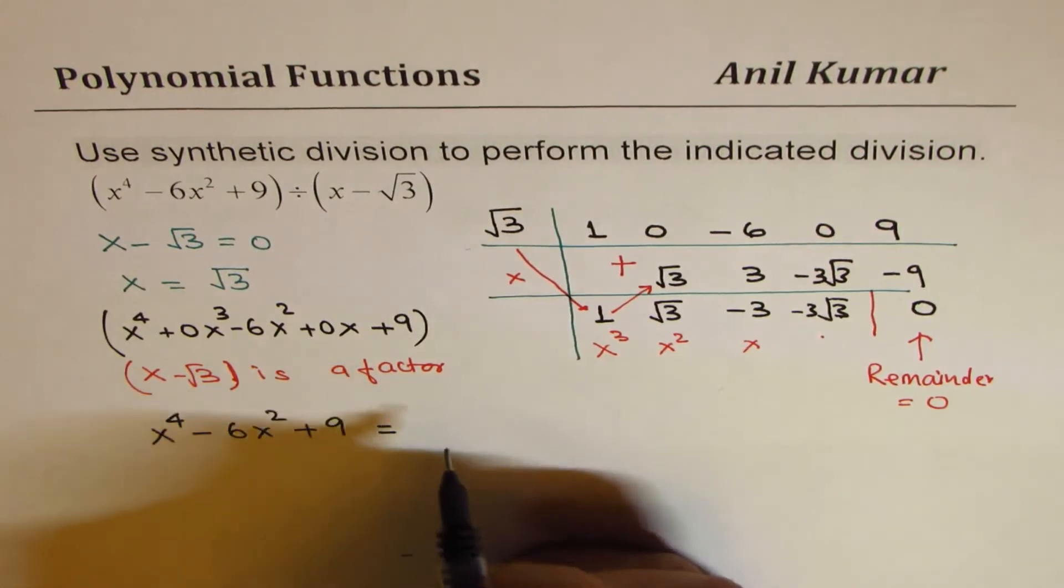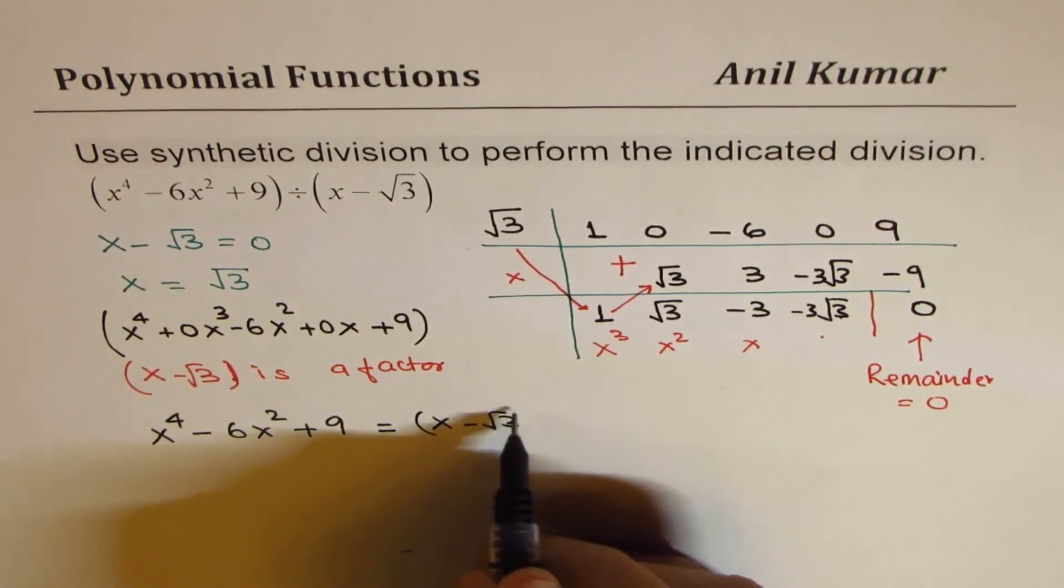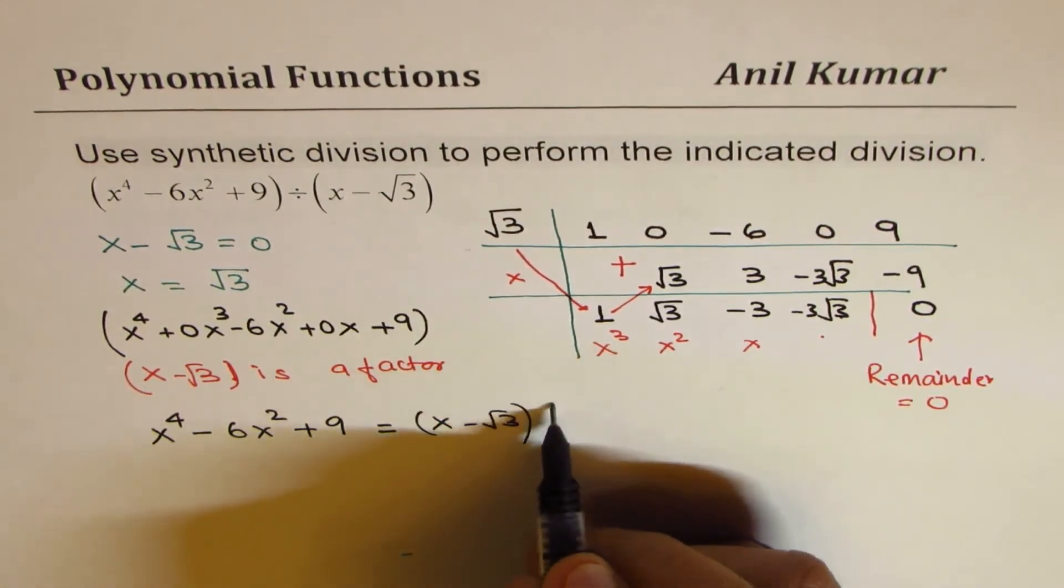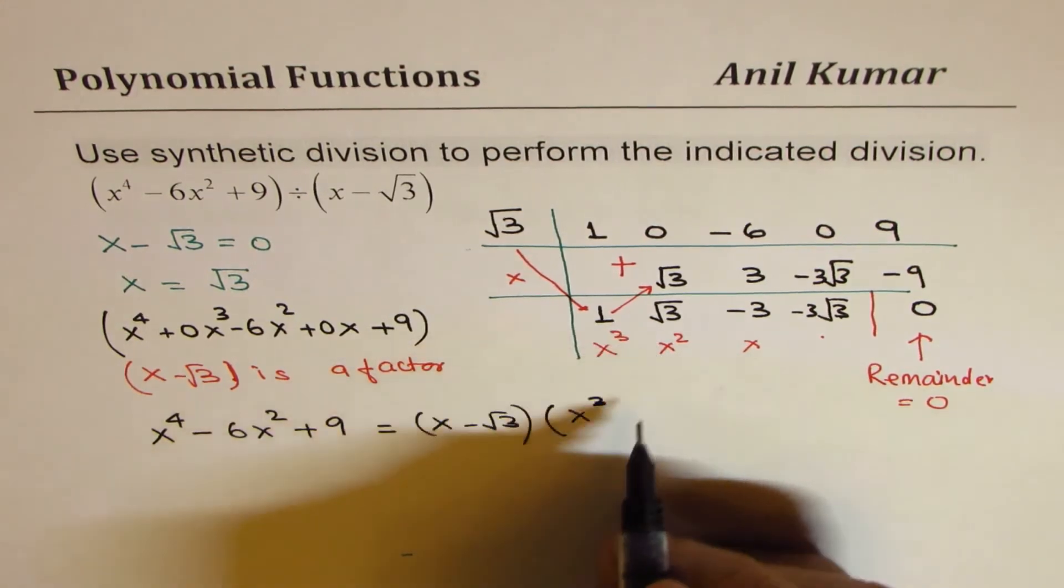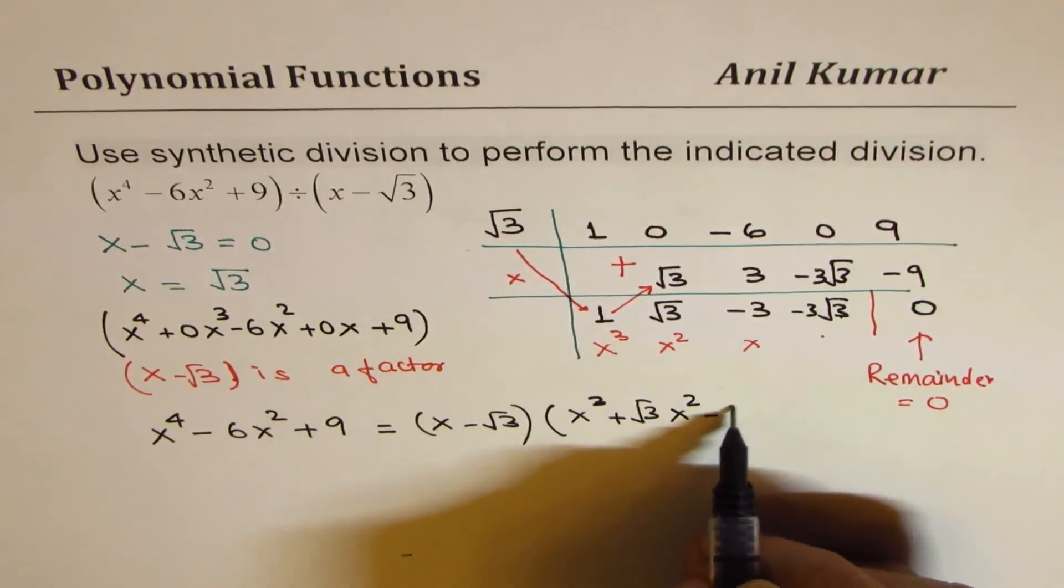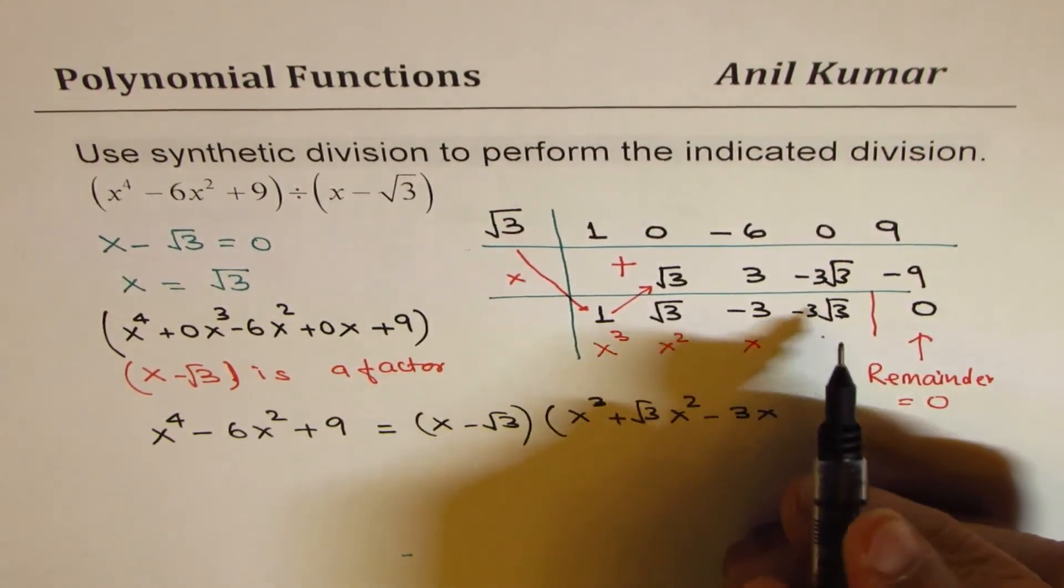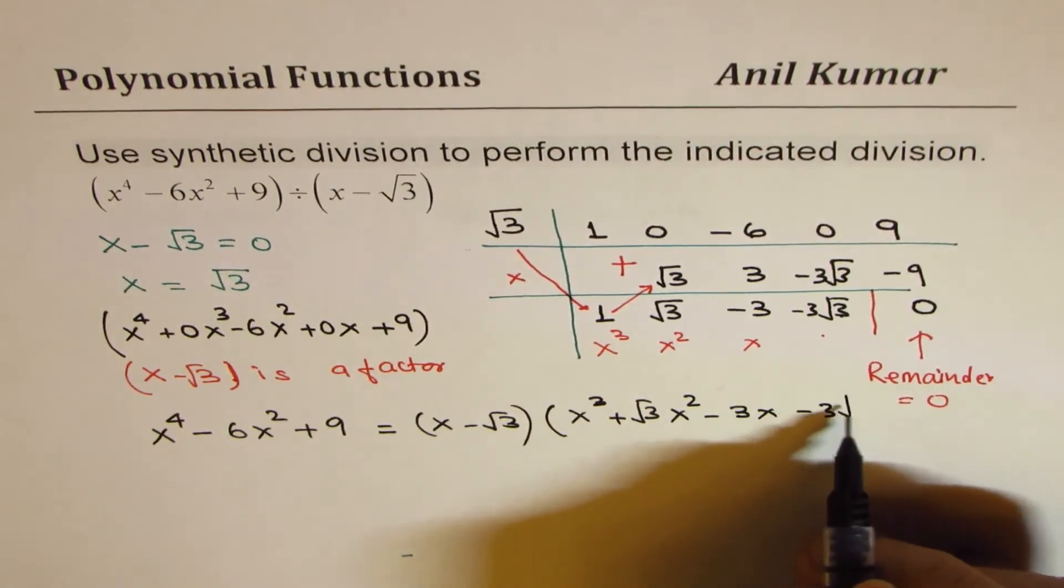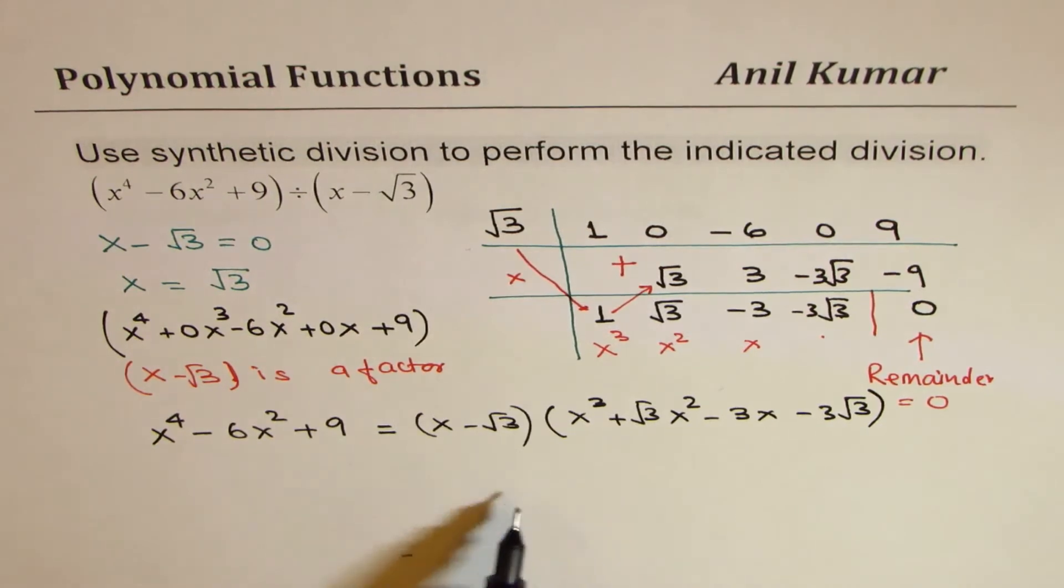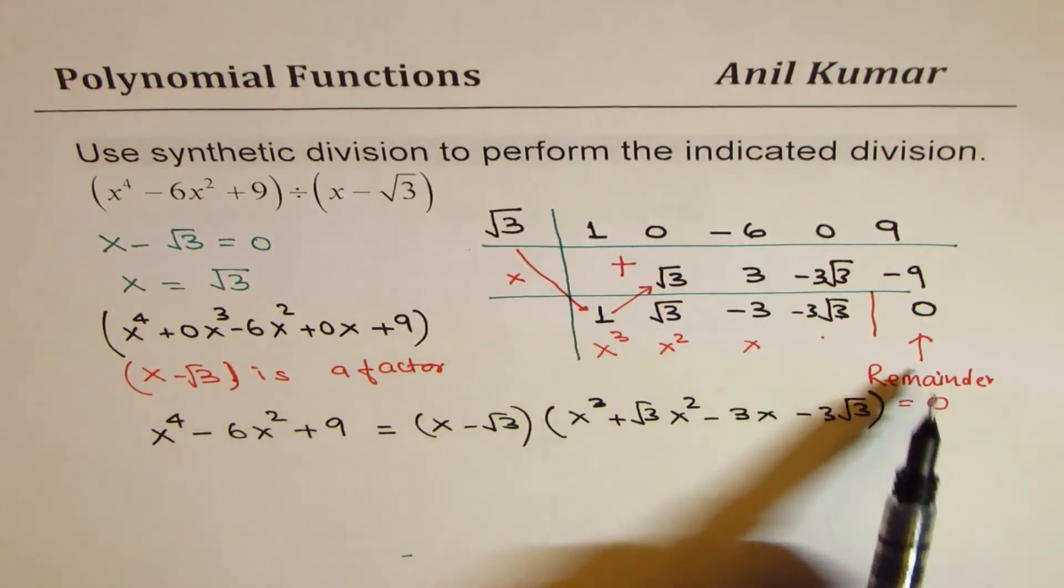So we could write this as x minus square root 3 times, so we get a cubic equation here. And that is x cube plus square root 3x square minus 3x, and that is the constant minus 3 square root 3. So that is the division statement. And we know that x minus 3 is a factor since the remainder is 0.